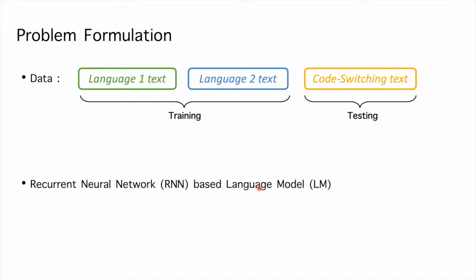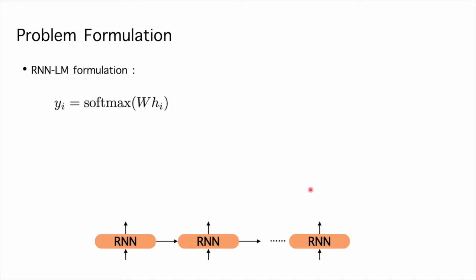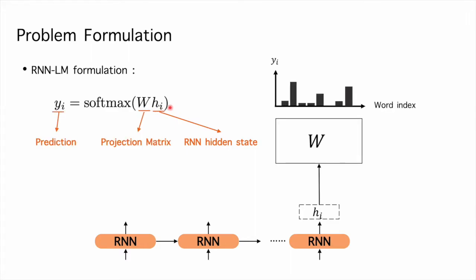And our goal is to train a code-switching language model. The RNN language model can be formulated as this equation. We multiply an RNN hidden state to a projection matrix W to obtain a word distribution in time step i. Then gradient descent is used to update the parameters of RNN with cross-entropy loss function.